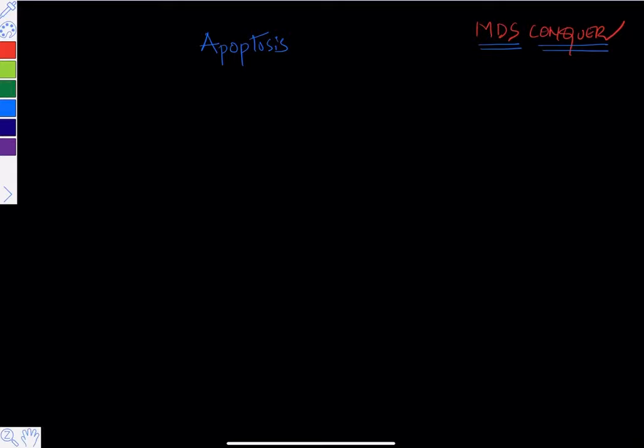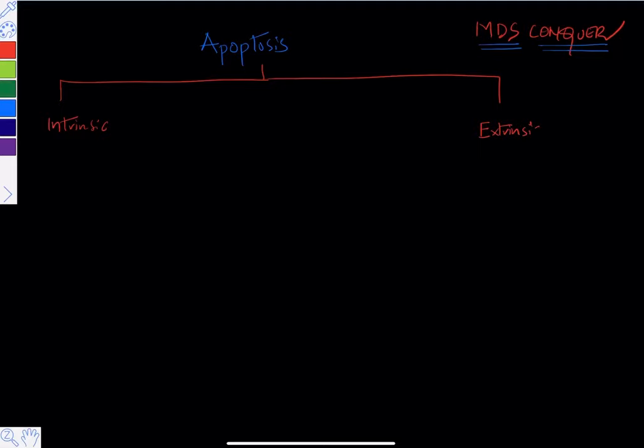Apoptosis occurs by two ways: one is the intrinsic pathway and the second one is the extrinsic pathway. The intrinsic pathway means it occurs inside the cell.